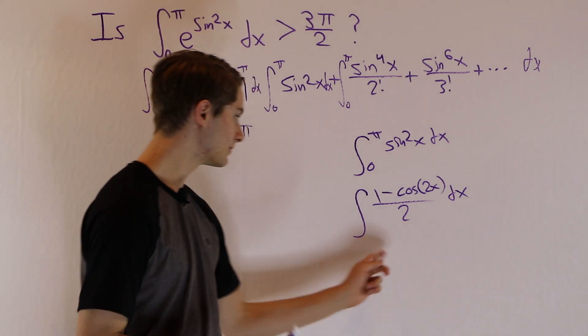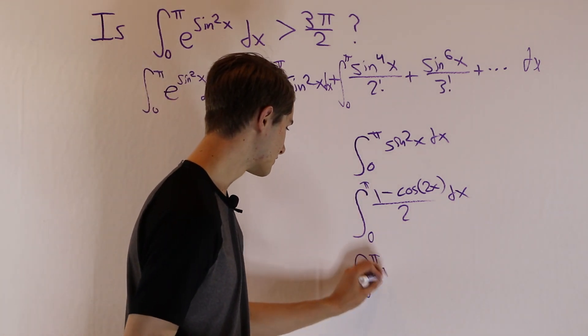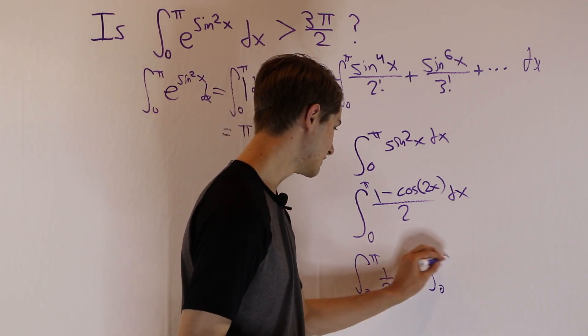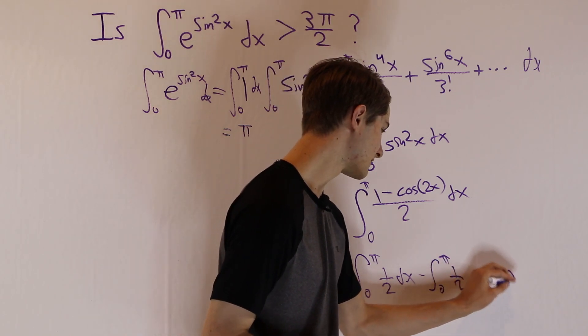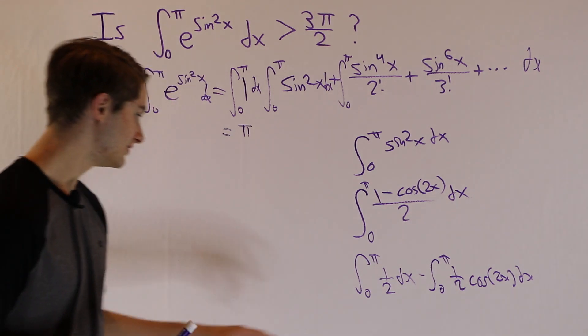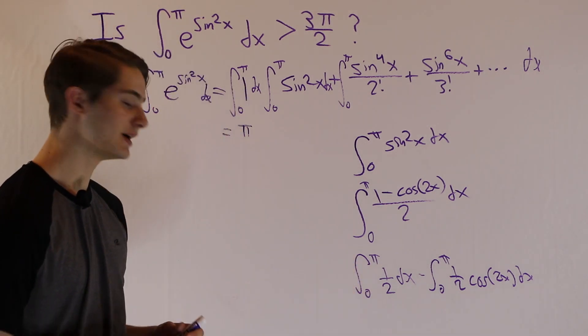And now we're at a point where we can actually integrate this, because we can split this up into the integral of 1 half, which is nice and easy, and then minus the integral of 1 half cosine 2x. So if we look at this first part, the integral of 1 half dx is going to be 1 half x. And then once again, it's going to be evaluated at π and 0. So this is going to be π over 2.